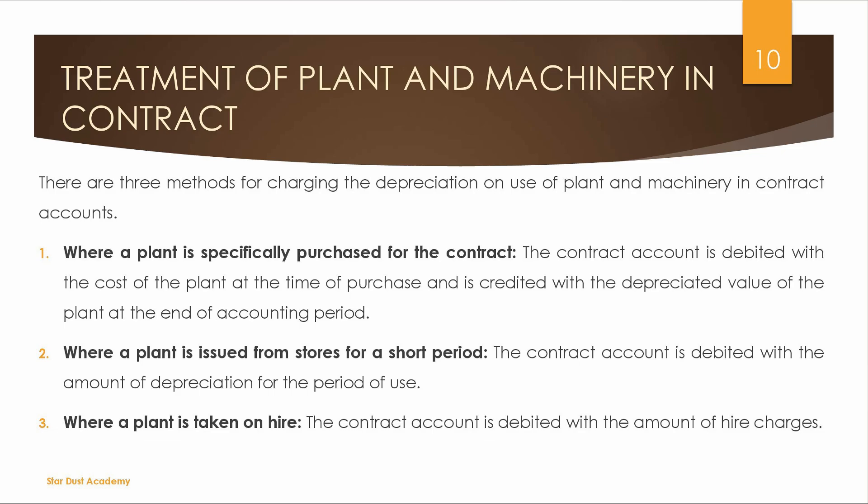Next is the treatment of Plant and Machinery. Case 1: when a plant is specifically purchased for the contract, the full cost is charged to the contract account. Case 2: when a plant is issued from stores for a short period, depreciation is charged to the contract account rather than the full cost.